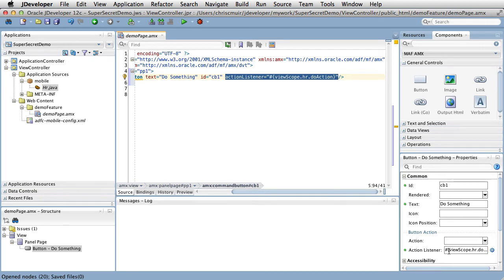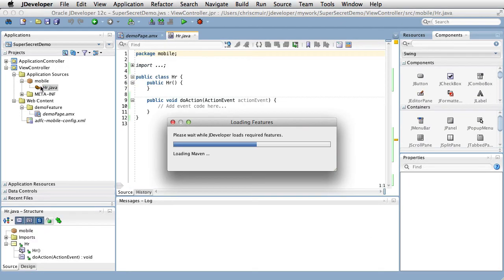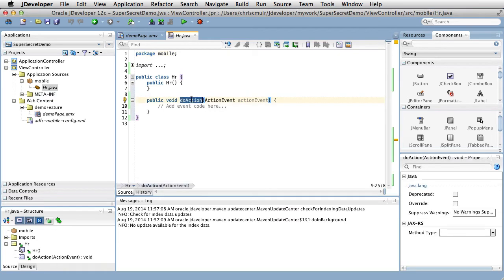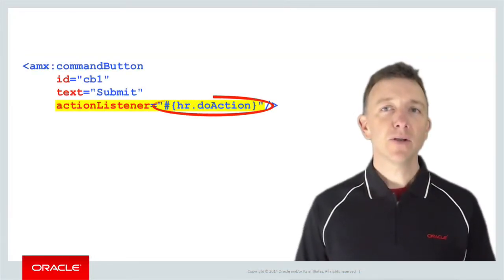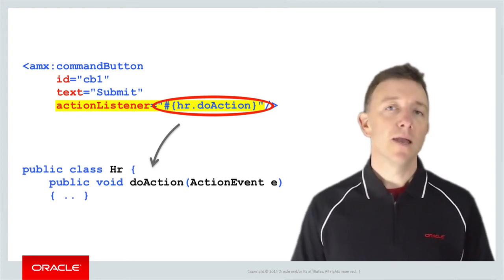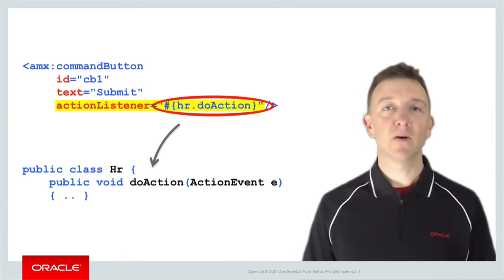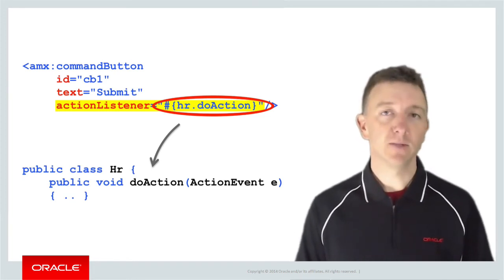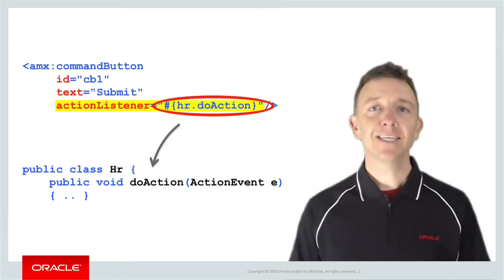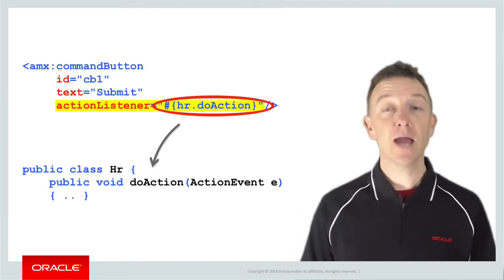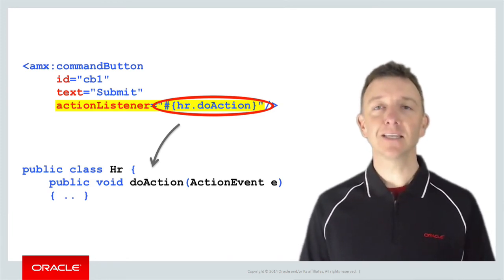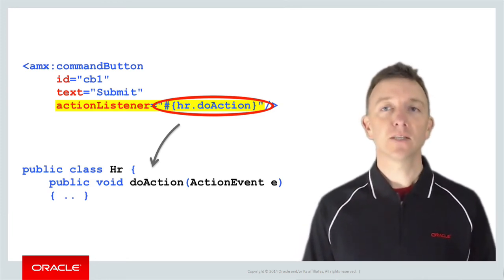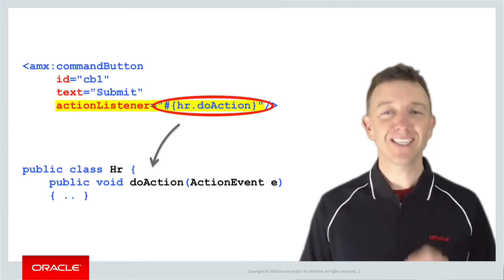Behind the page, we can now see our new Java HR bean under the model package. If we open that, we can see the doAction method for the command button that we just created. You'll notice that the method has a very specific specification. The method name is up to you, as long as it matches that specified in the AMX command button's action listener EL expression. The parameter of that method is the very specific part. For a command control like a command button, the action listener must accept an oracle.adf.mf.amx.event.ActionEvent object. If it doesn't, the action listener calling the method won't work, because it's looking for a method of the same name that returns void with a parameter of that specific type.